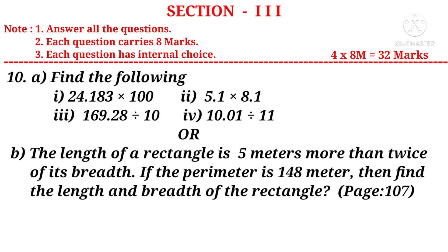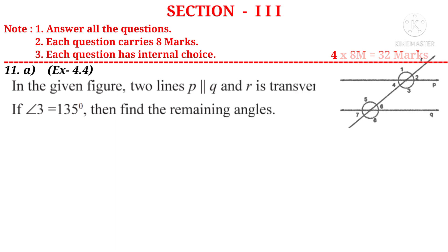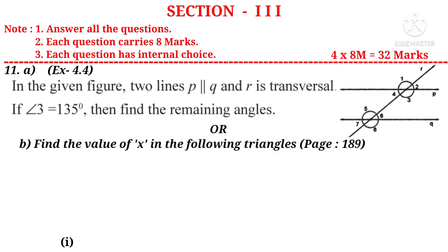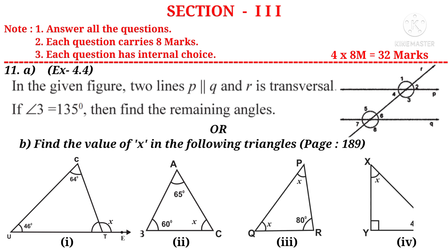Question 10B: The length of a rectangle is 5 meters more than twice its breadth. If the perimeter is 148 meters, then find the length and breadth of the rectangle. It is a question from Simple Equations. Question 11A: In the given figure, two lines P is parallel to Q and R is a transversal. If angle 3 is 135 degrees, find the remaining angles — from chapter Lines and Angles. Or 11B: Find the value of X in the given triangles — from chapter Triangles.